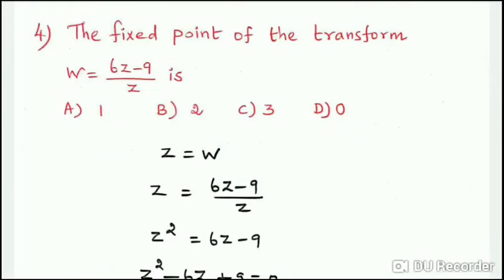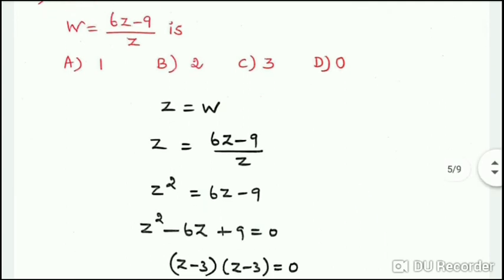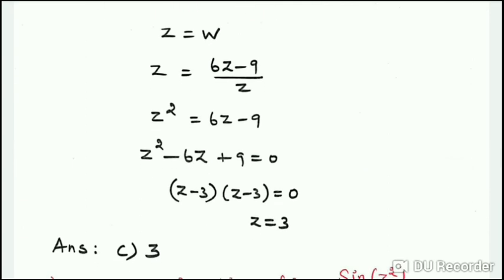Next question: the fixed point of the transformation w = (6z - 9)/z. To find the fixed point, set w = z, so z = (6z - 9)/z. This gives z² = 6z - 9, rearranging to z² - 6z + 9 = 0, which factors as (z - 3)² = 0. Therefore z = 3. Option C: the answer is 3.